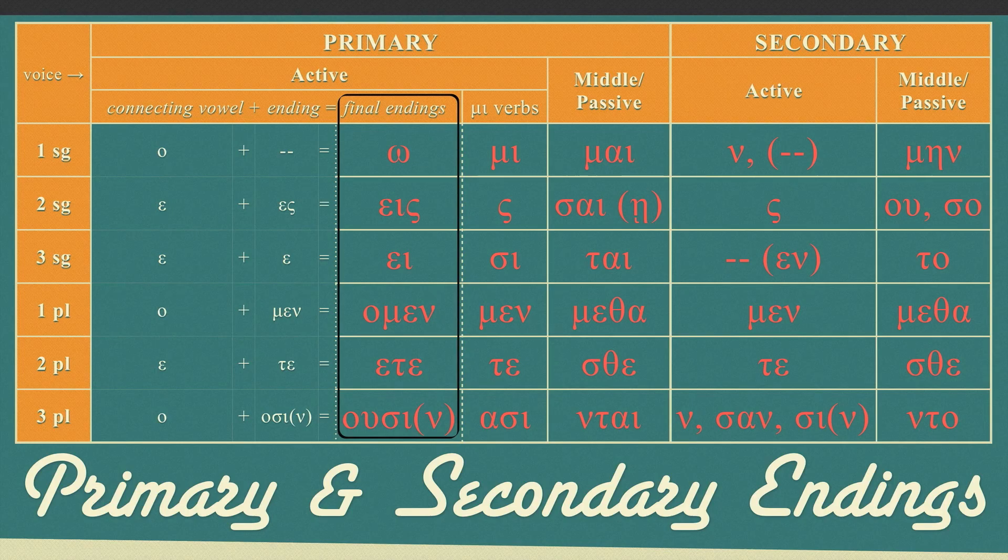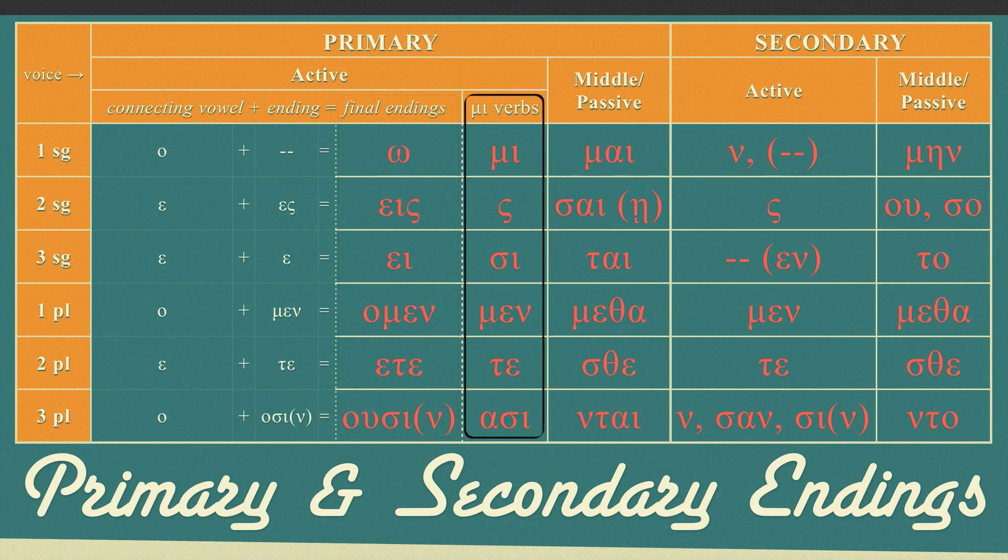There is also a second set of primary active endings labeled as ME verbs that you should become familiar with now, but ME verbs will be discussed in a later video. The ME verb endings are ME, SIGMA, SI, MEN, TE, ASI.